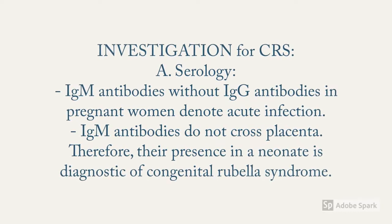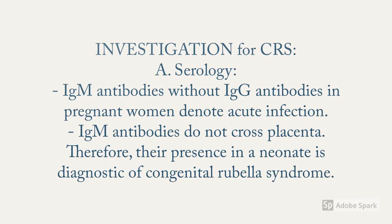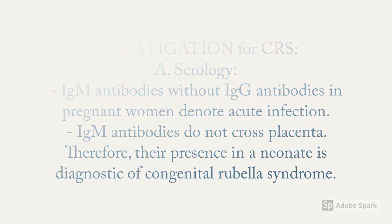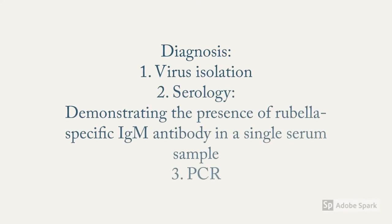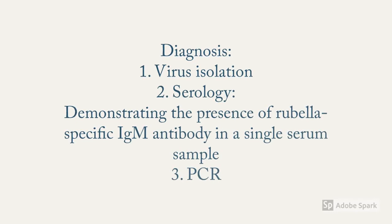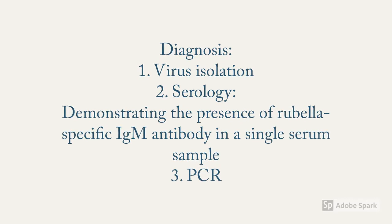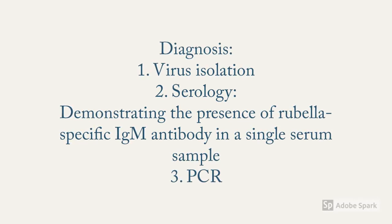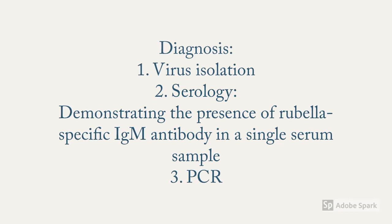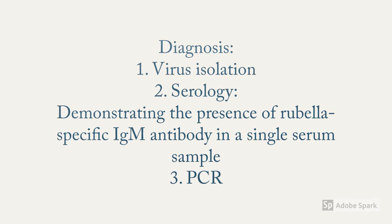Diagnosis of congenital rubella syndrome mainly relies on serology. Demonstration of IgM antibodies without IgG antibodies in pregnant women denotes acute infection. Since IgM antibodies do not cross the placenta, their presence in a neonate is diagnostic of congenital rubella syndrome. Diagnosis can also be made by demonstration of rubella-specific IgM antibody in a single serum sample, and in some places reverse transcriptase PCR has been used to isolate the viral genome.